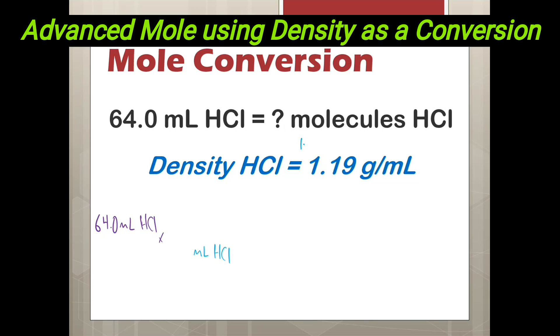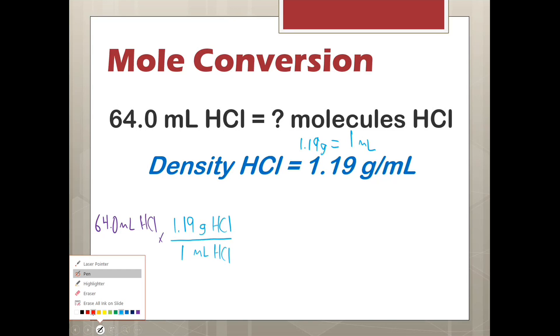When we are dealing with density, this is 1.19 grams equals 1 milliliter. So, I'm going to take my milliliters down and change it to grams. For every 1 milliliter, there is 1.19 grams. I then am going to use a mole conversion. I am going to take my grams of HCl down and change that to molecules of HCl. Whenever I do molecules to grams, the molecules is 6.02 times 10 to the 23rd, and the grams is off of the periodic table.